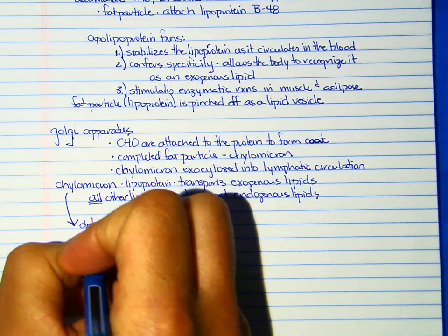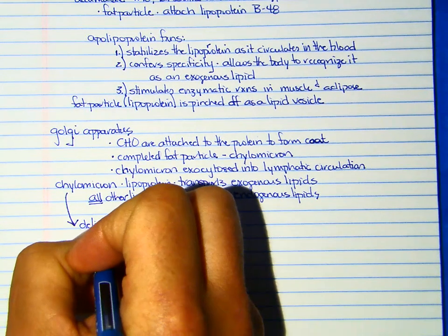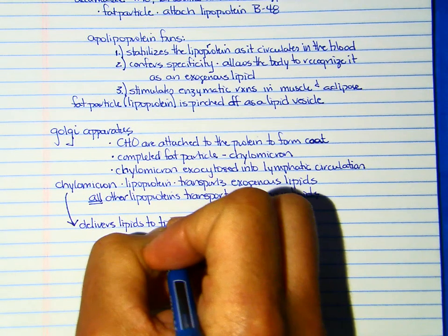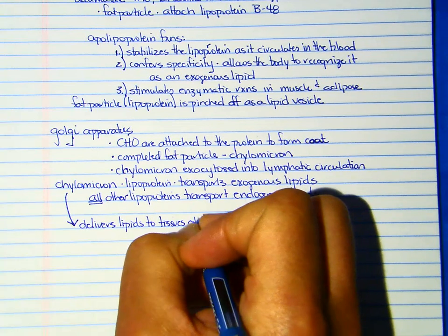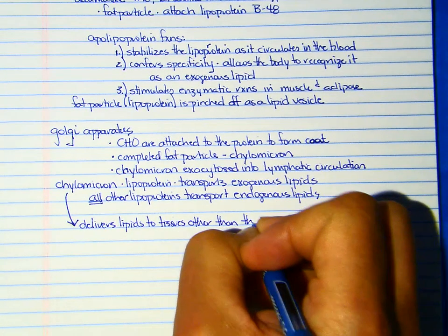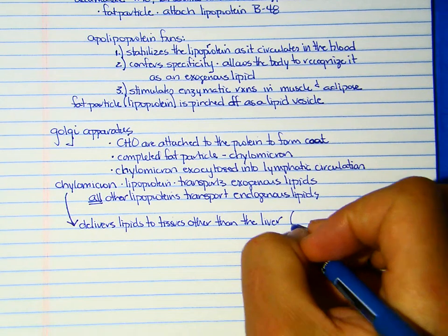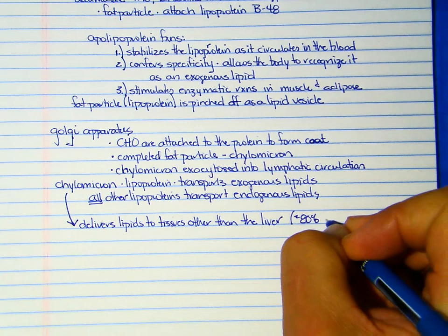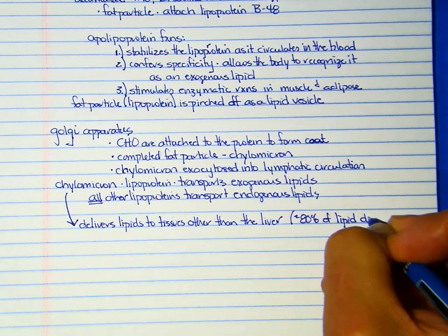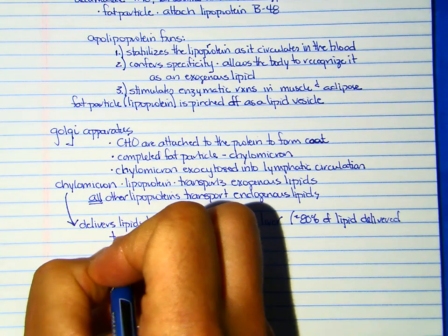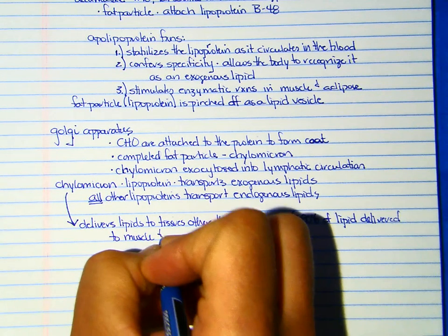So chylomicrons are lipoproteins that specifically transport exogenous lipids, so dietary lipids. All other lipoproteins transport endogenous lipids. And so something to keep in mind that's important about the chylomicron is it delivers lipids to tissues other than the liver. So your exogenous lipids, in contrast to almost everything else, are not going to go to the liver. They're first going to go to the muscle and the adipose. So approximately 80% of the lipid is delivered to muscle and adipose.